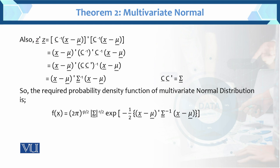Further, z prime times z — substituting the values, z prime as transposed first, then z as c inverse times (x minus mu) — each factor remains as it is. Looking at these factors: both involve inverses.